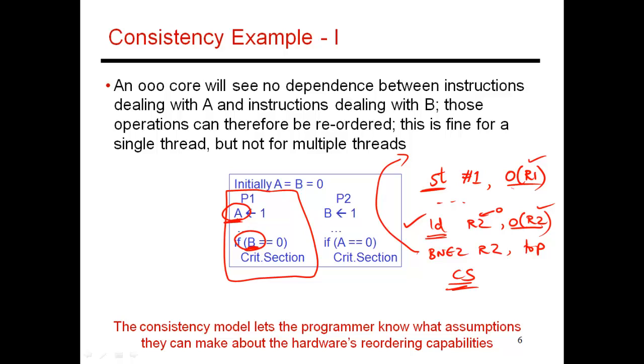What we should be saying is that the hardware should no longer be performing these reorderings. It is important for the world to see your store to A first, and then your read of B. This is pretty bad news from the point of view of performance, because we're giving up on our load-store queue being able to reorder instructions. But I'll soon show you how to work around that constraint.